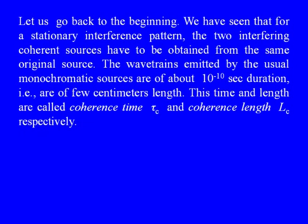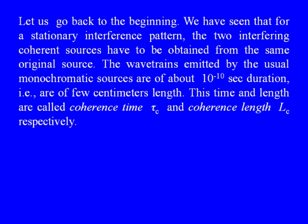Let us go back to the beginning of this series. We have seen that for a stationary interference pattern, the two interfering coherent sources have to be obtained from the same original source. Now, the wave trains emitted by the usual monochromatic sources are of about 10 raised to the power minus 10 seconds duration. In terms of length, they are of a few centimeters.